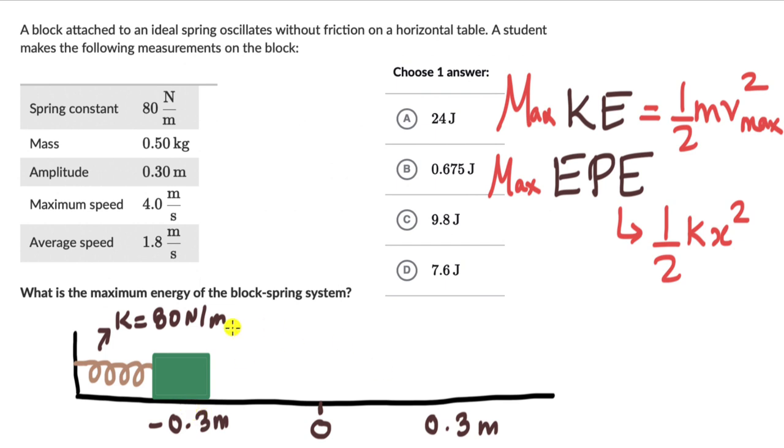An extension is maximum at two positions, that is at two extreme positions, maximum negative and maximum positive. So x will really be the amplitude. This is the amplitude. So the maximum energy of the block spring system, this is half m v max square plus half k a square.